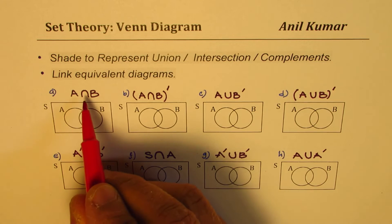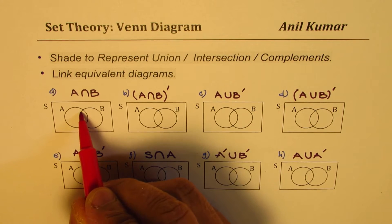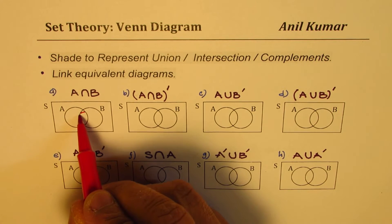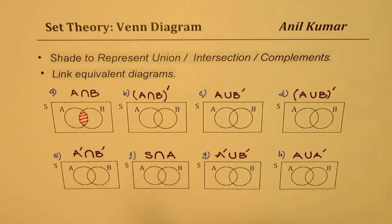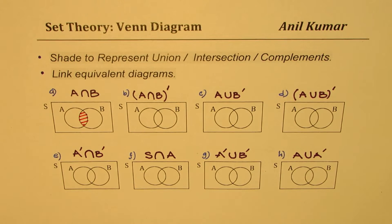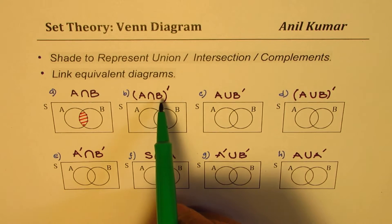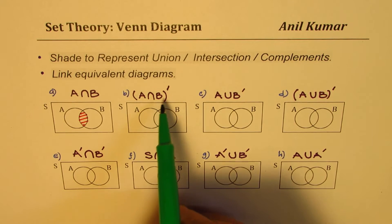A∩B means the region common to both. The region common to both is right there — so this is common to both. Simple. The next one is the complement of the intersection of A and B. That bar or dash means 'not what is inside'.